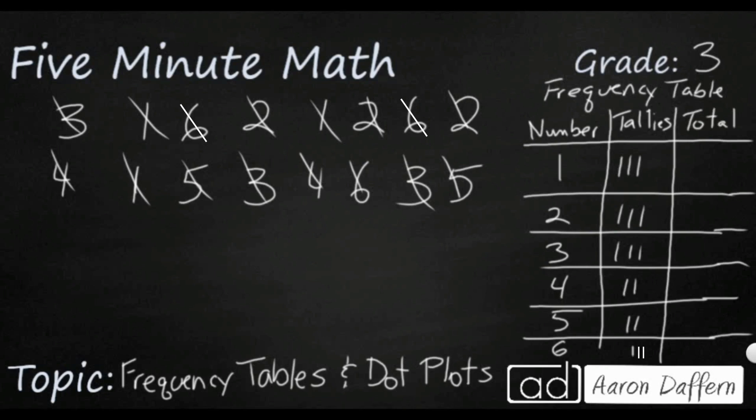And so you're just going to take what's in the tallies and you're going to put it in numerical form. So how many times did I roll the number one? Three times. I rolled the number two three times, three three times. The number four was rolled twice, as was five. And then six was rolled three times.